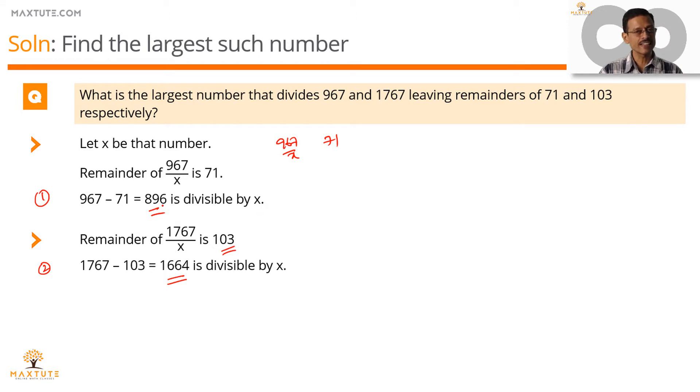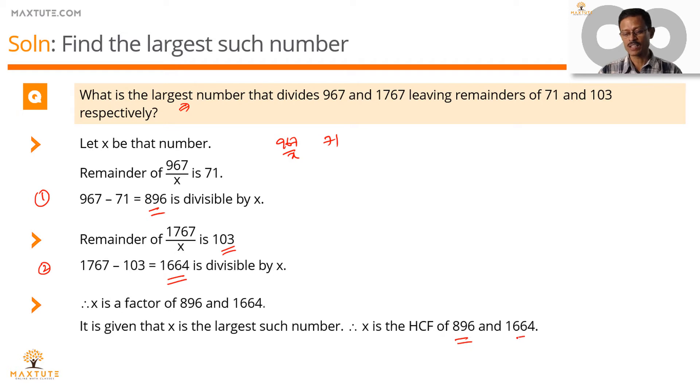So, x divides 896, x divides 1664. x is a factor of 1664 and 896 or x is a common factor of 896 and 1664. x is a larger such number we are interested in. So, x is nothing but the HCF of 896 and 1664.